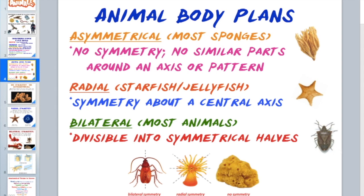The last body plan is bilateral — 'bi' meaning two and 'lateral' meaning side. This is a distinct left and right side. A human has a left and right arm, a left and right leg, two nostrils, two corners of the mouth, two eyes, and two ears — that is bilateral symmetry.